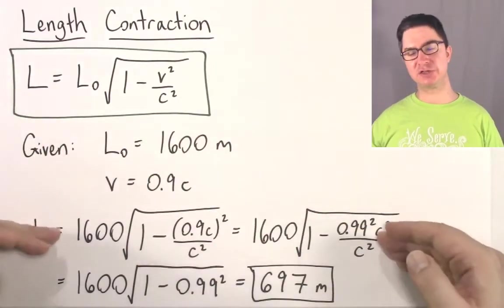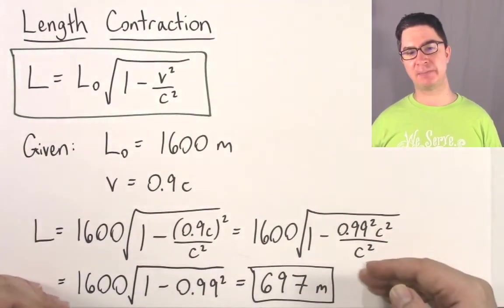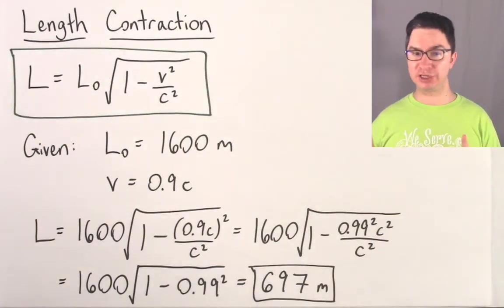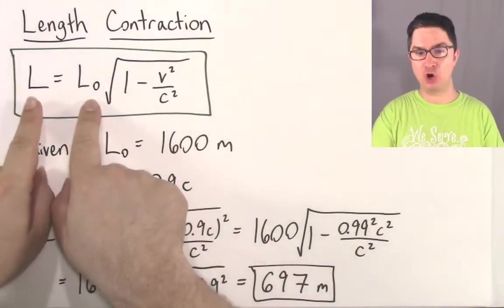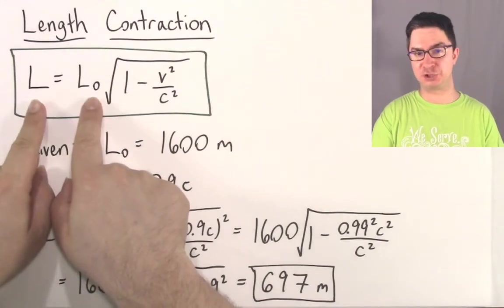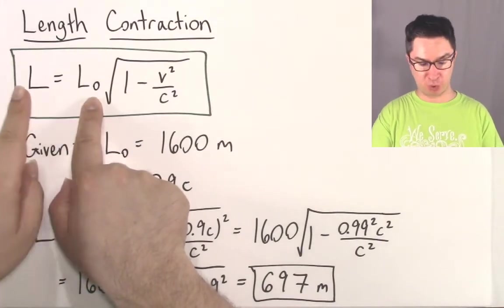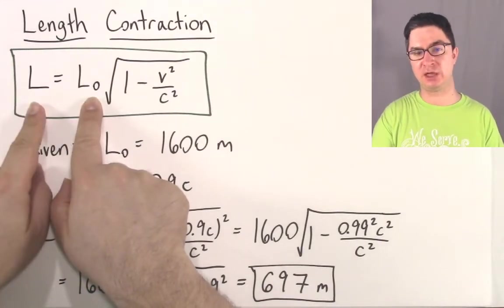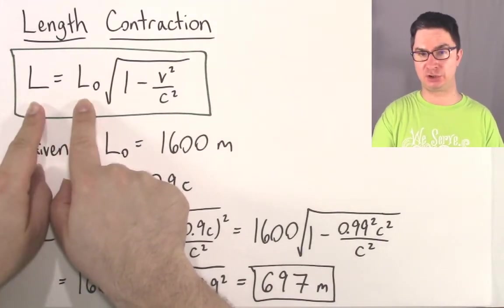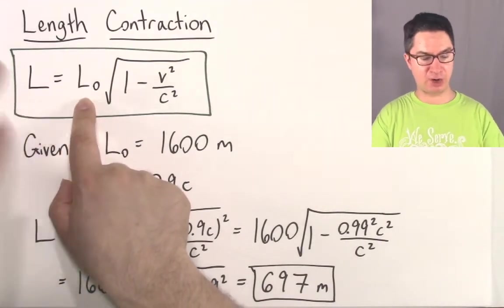As you can see, the math is not that bad, but we really need to focus in on what these two different values are — what is this capital L and what is this L₀?